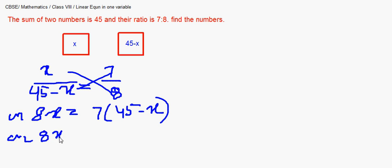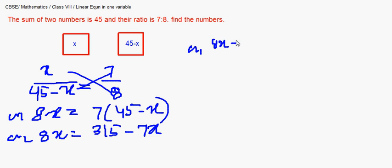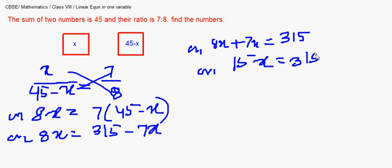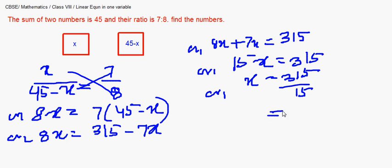Cross-multiplying: 8x = 7(45 − x), giving 8x = 315 − 7x. Bringing 7x to the left: 8x + 7x = 315, so 15x = 315, making x = 315/15 = 21. If one number is 21, the other is 45 minus 21, which is 24. The two numbers are 21 and 24.